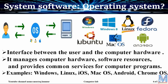The operating system is an interface between the user and the computer hardware. Whenever a user sends an instruction or command to the computer, the operating system translates that command in a way that is understandable by the computer. When the computer receives that command, it processes it and replies to the user through the operating system, which also makes that output understandable by the user.